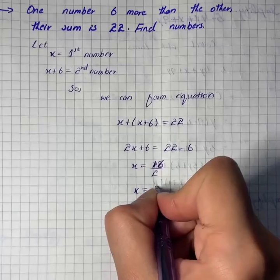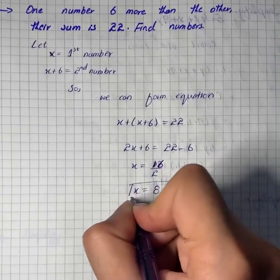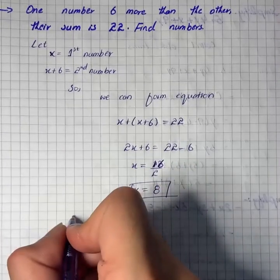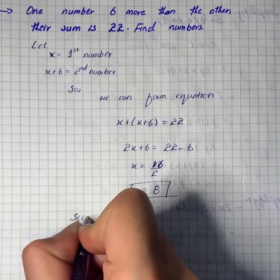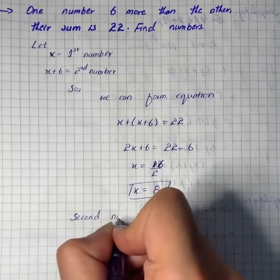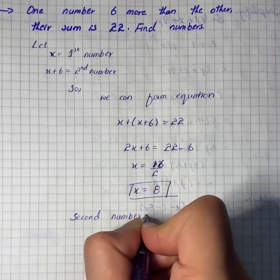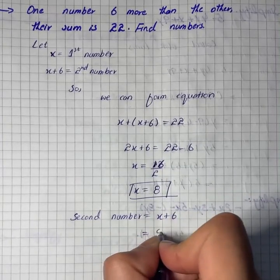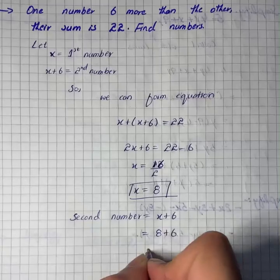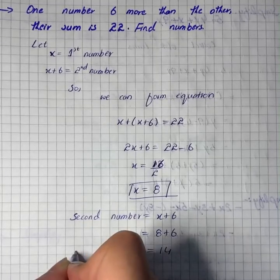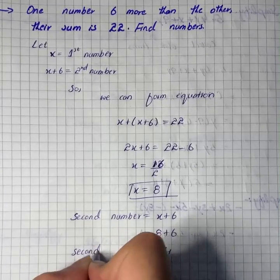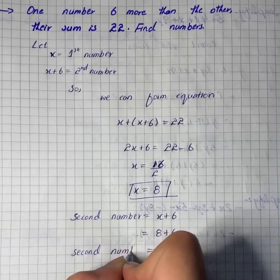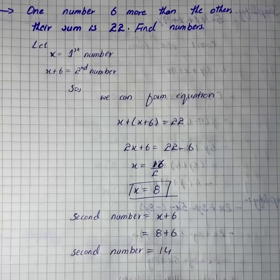That's right, the first number is 8. The second number equals x plus 6, so 8 plus 6 equals 14. We have both our numbers.